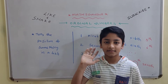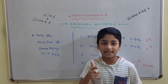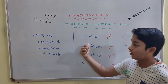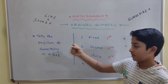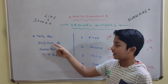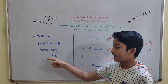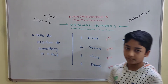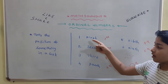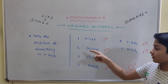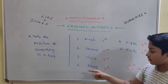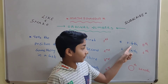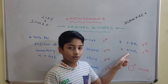Hi friends, this is your Vedic. Today's word is Ordinal Numbers. A number that tells the position of something in a list is called an ordinal number — for example, 1st, 2nd, 3rd, 4th, 5th, and so on.